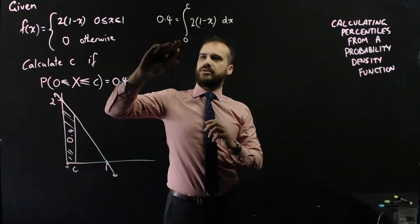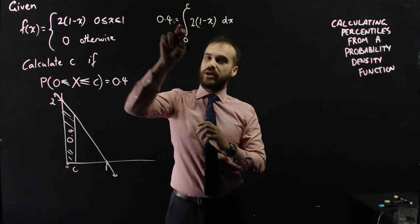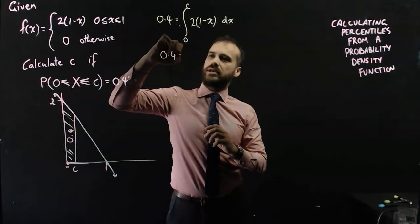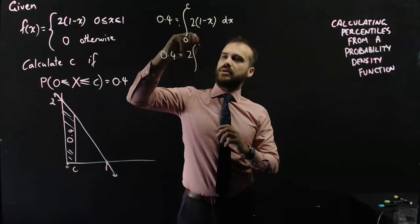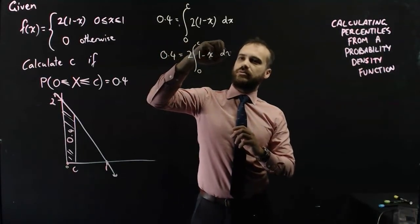Okay, I'm going to get rid of that 2 by bringing it out the front of the integral. 0.4 equals 2, integral from 0 to C, 1 minus X with respect to X.